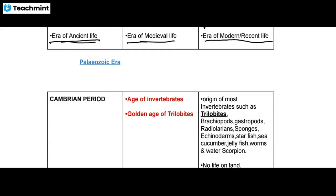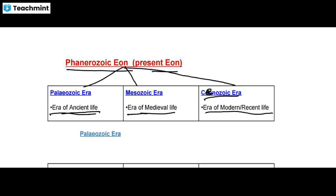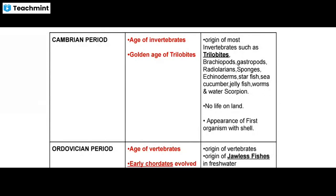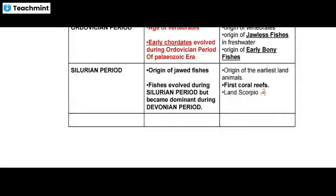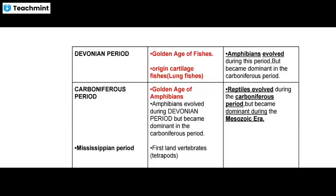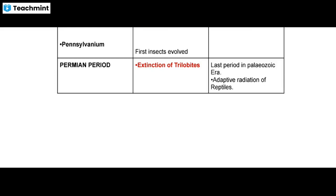The Paleozoic era is again divided into 6 periods. The six periods of the Paleozoic era are: first, the Cambrian period; second, the Ordovician period; third, the Silurian period; fourth, the Devonian period; fifth, the Carboniferous period; and finally sixth, the Permian period.